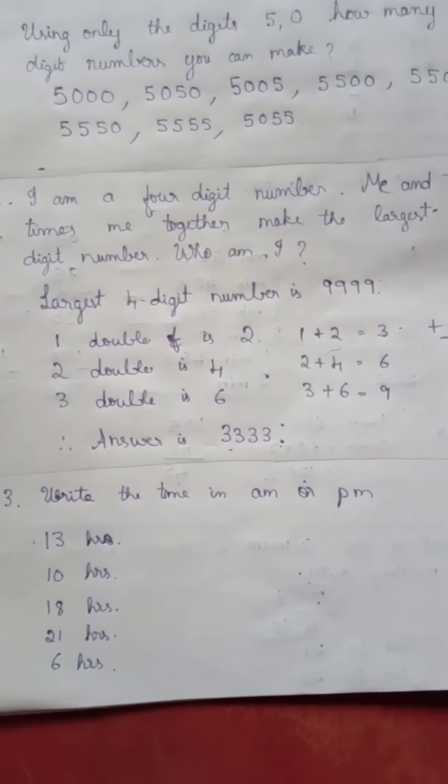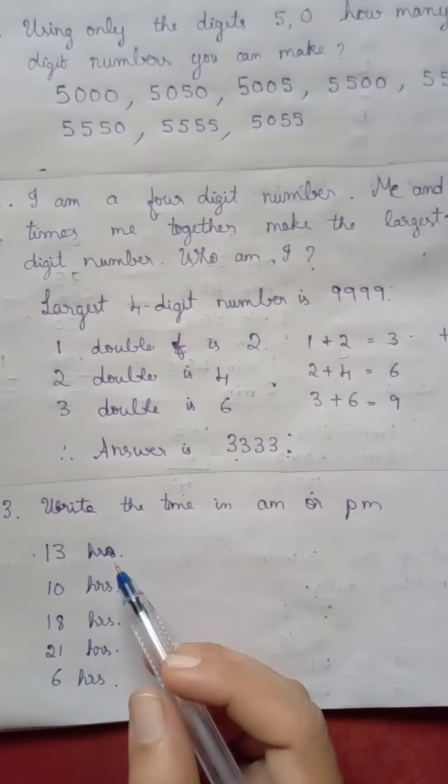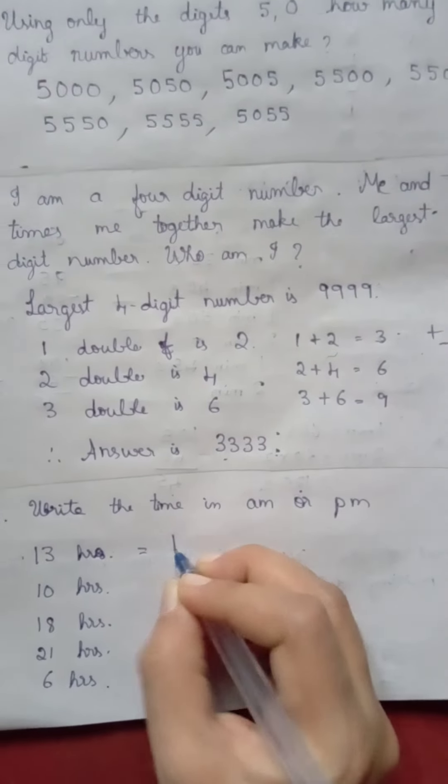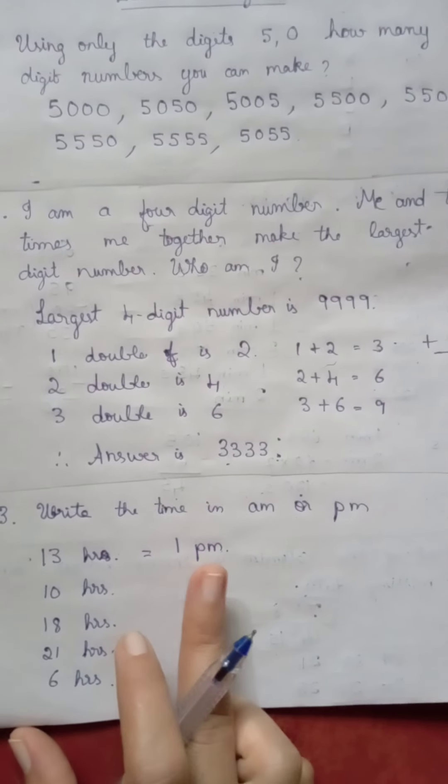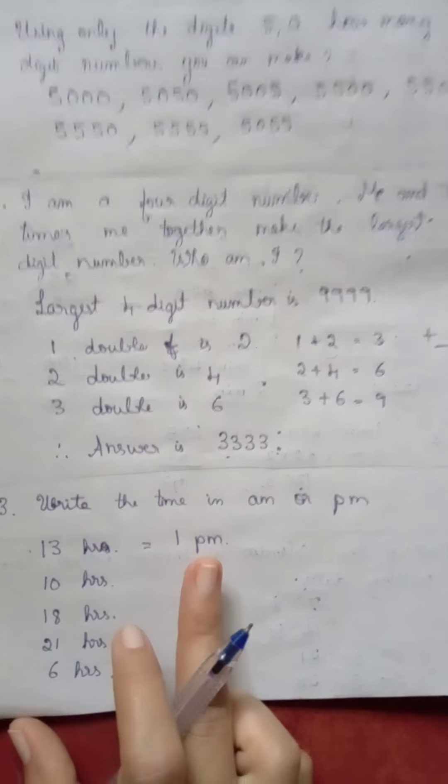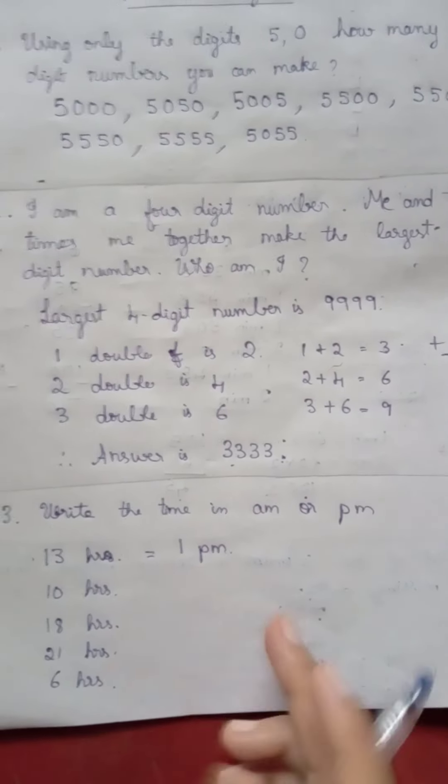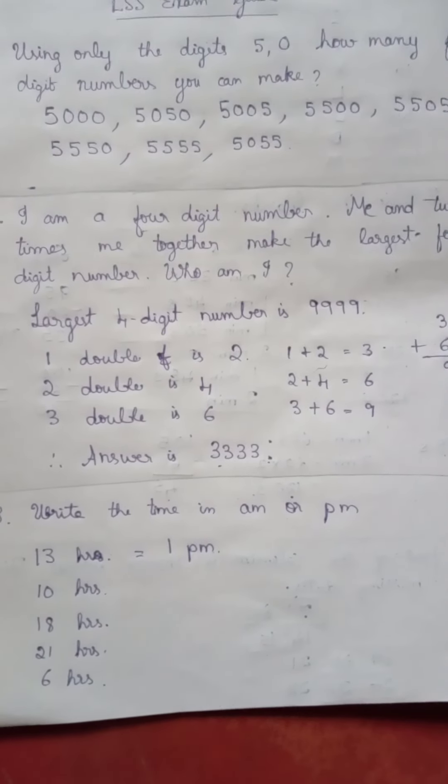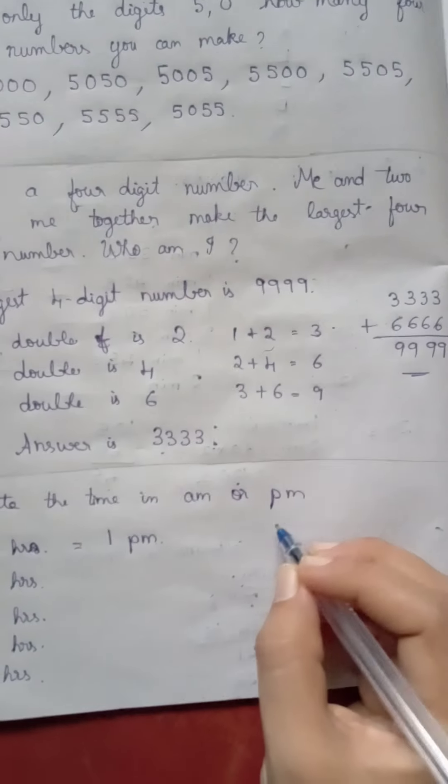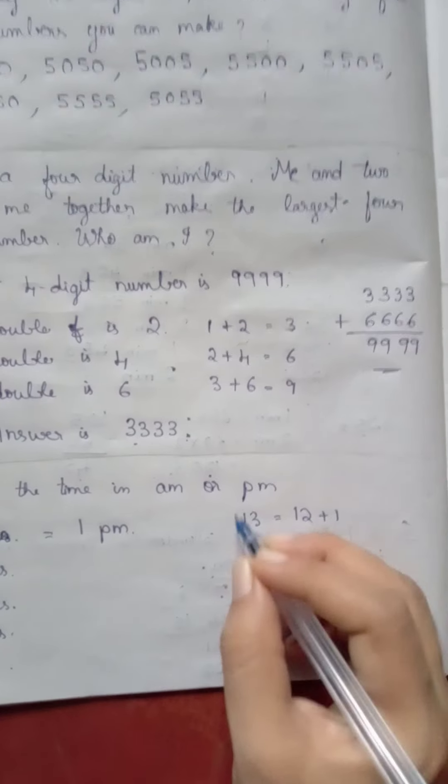Write the time in am or pm. 13 hours. 13 hours means we know that 13 hours means it is 1 pm. After 12 o'clock in the afternoon, whatever time we write will be in pm. Before 12 o'clock, whatever we write will be am. So 13 is equal to 12 plus 1, therefore 13 hours is 1 pm.